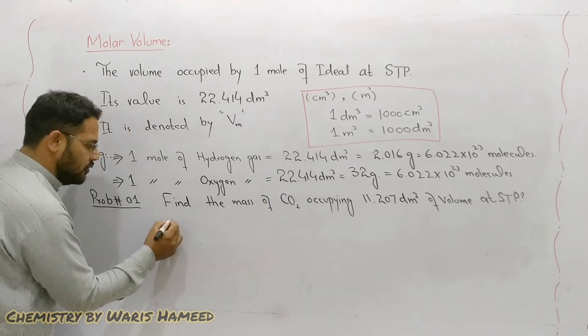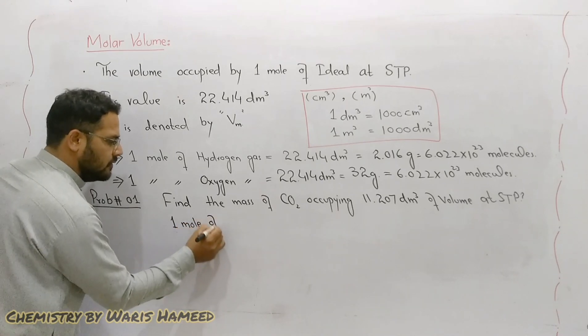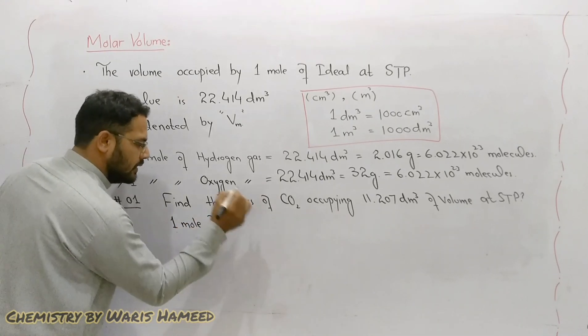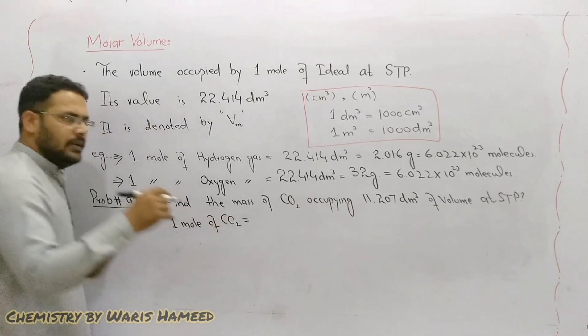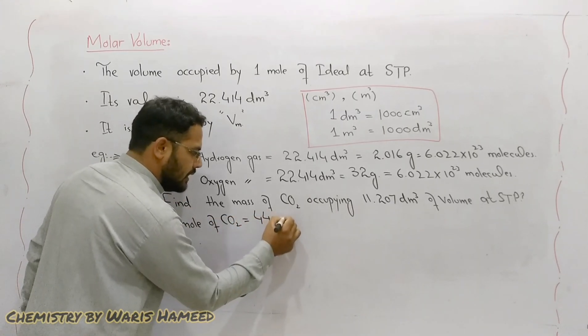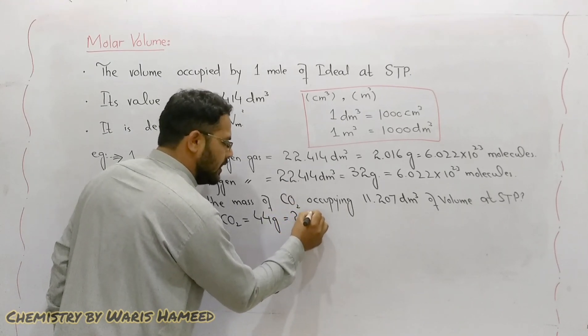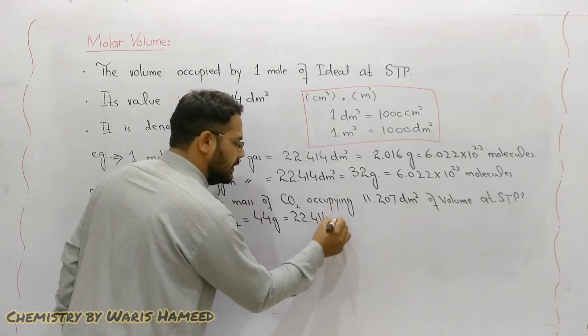We know that if we have one mole of carbon dioxide it is equal to 44 grams and it will occupy 22.414 dm³.